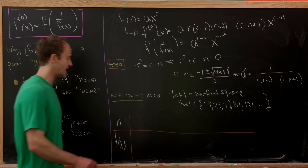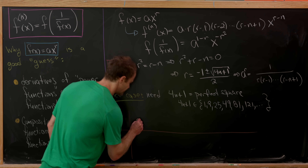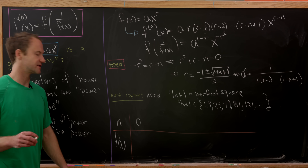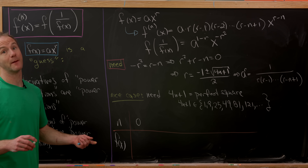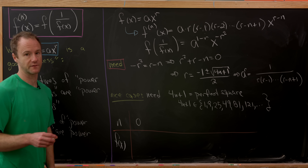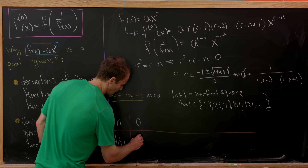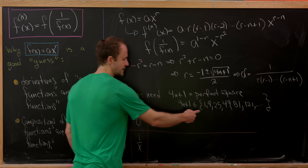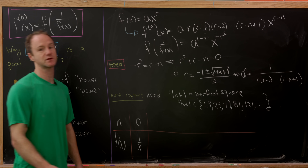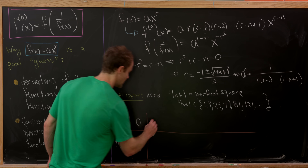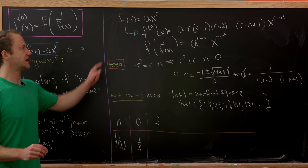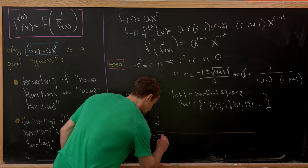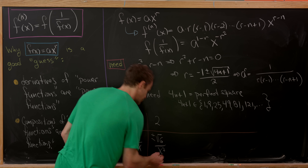The first case is n equals 0, meaning we take no derivative at all — probably many solutions exist beyond power functions. The power-function solution here is 1/x. The next case is n equals 2, which gives 4n+1 equals 9 — that's exactly the second derivative case we just worked through, giving f(x) = ±√6 / x².